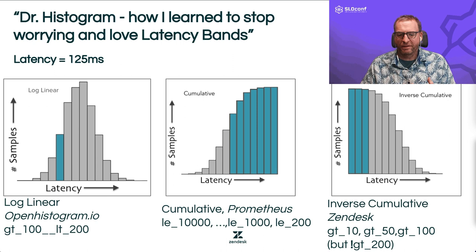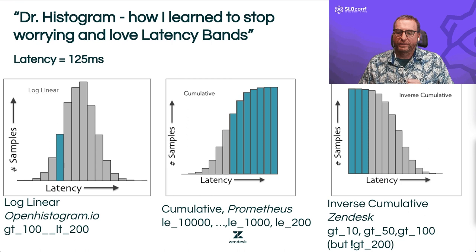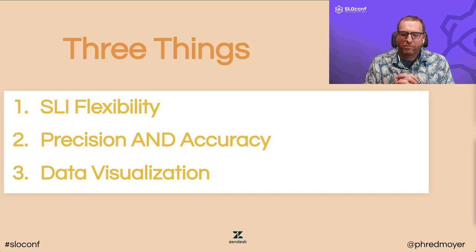At Zendesk, I came up with something called the inverse cumulative histogram — basically taking the cumulative histogram and turning it on its head. For 125 milliseconds you'd have tags: greater than 10, greater than 50, greater than 100, but not greater than 200. This has the advantage over the cumulative implementation of not having a lot of tags for really low latency values.